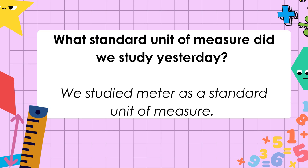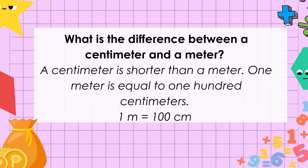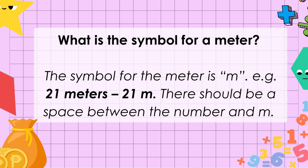What standard unit of measure did we study yesterday? We studied meter as a standard unit of measure. What is the symbol for meter? The symbol for the meter is M. For example, 21 meters is written as '21 M'. Remember, there should be a space between the number and the letter M.